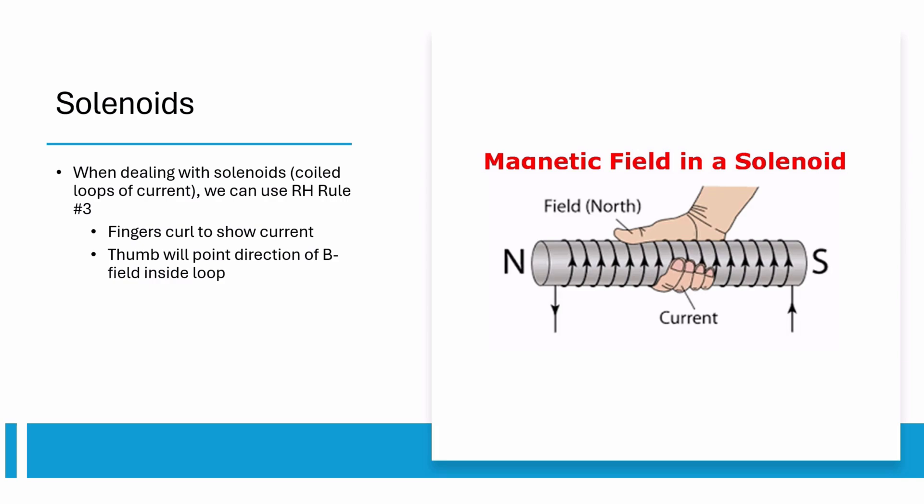Be careful, because the B-field outside the solenoid is different. B-field lines outside the solenoid point from north to south. How do you actually calculate B-field inside the solenoid? Remember the equation B equals μ₀nI, with n equaling loops per meter.